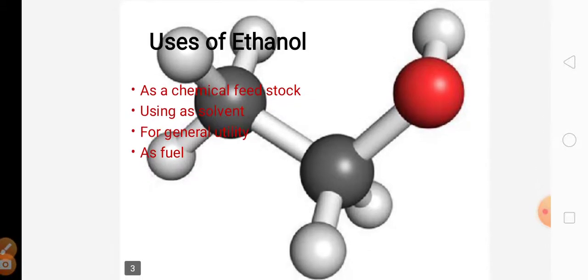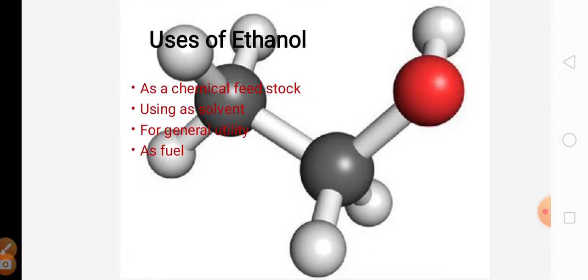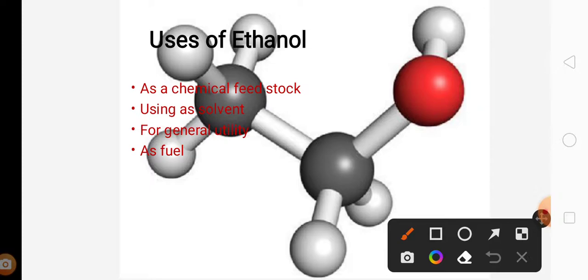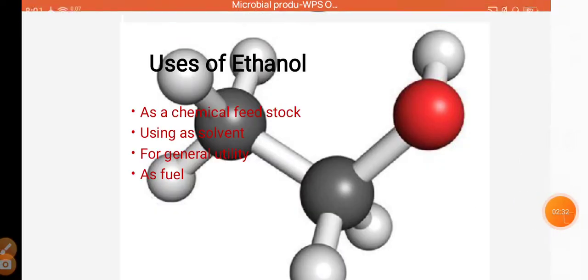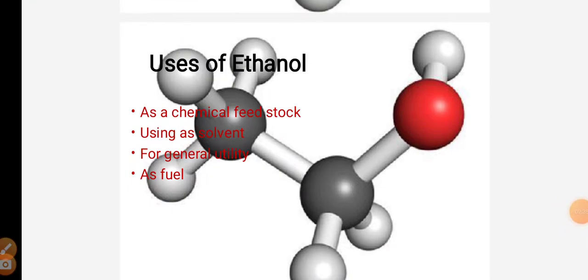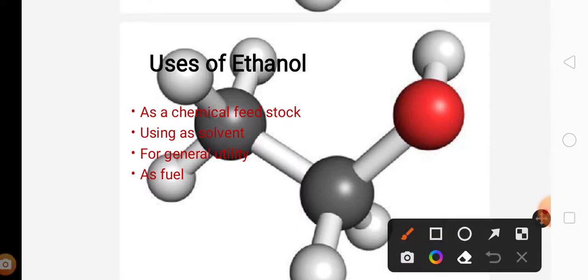Next comes the uses of ethanol. Ethanol is used as a chemical feedstock. At industrial production level, ethanol is used in many processes as it is highly reactive, hence it is used as a chemical feedstock. Ethanol is used as a solvent.